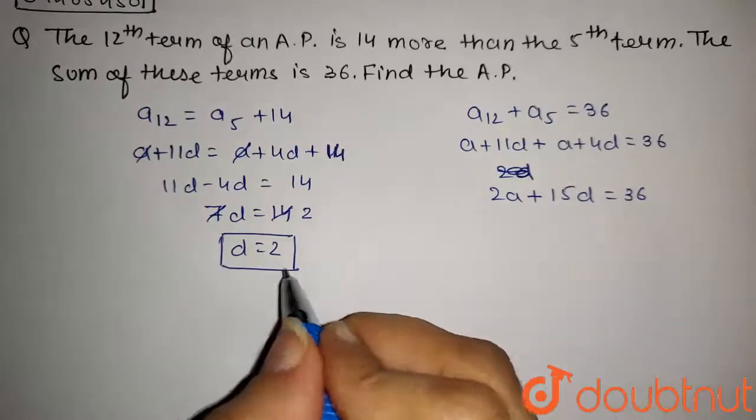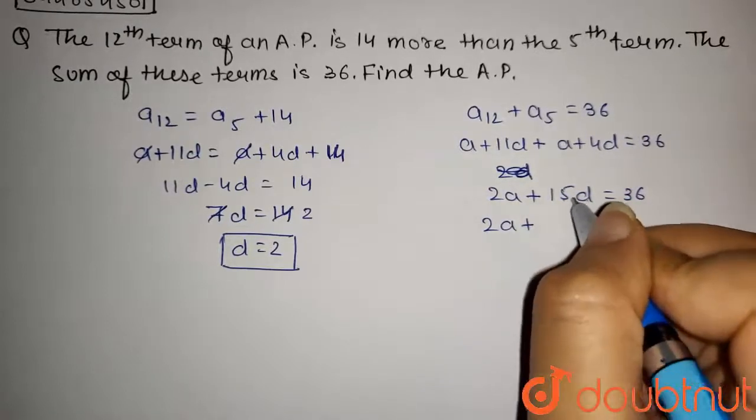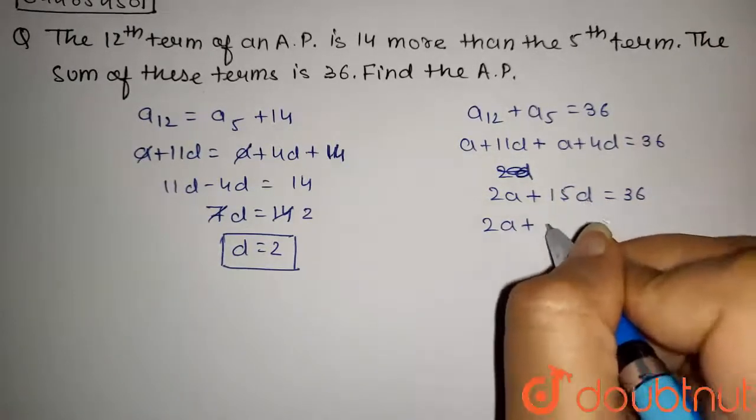Now, we have the value of D. So 2A plus 15 into D, that is 15 into 2 equals 30. So it equals 36.